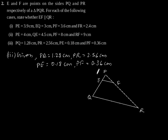PQ is 1.28 cm and PR from here to here is 2.56, and PE is 0.18 and PF is 0.36.